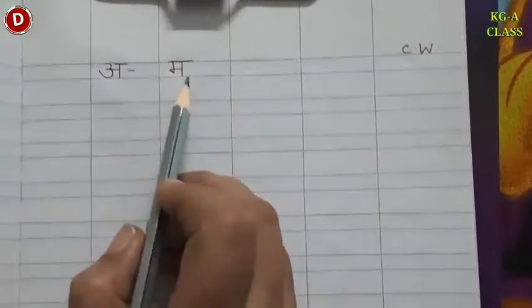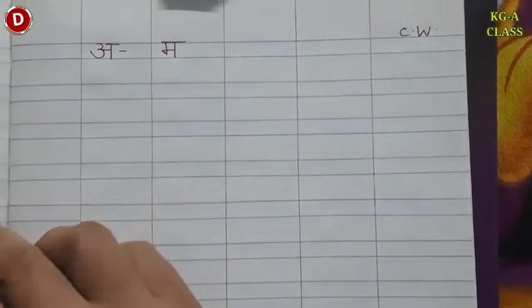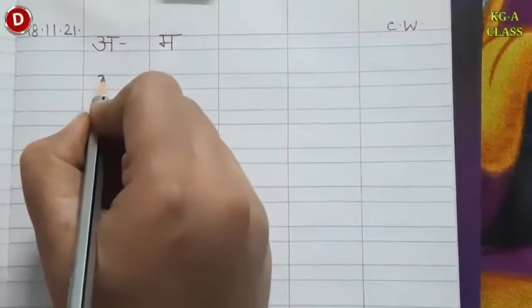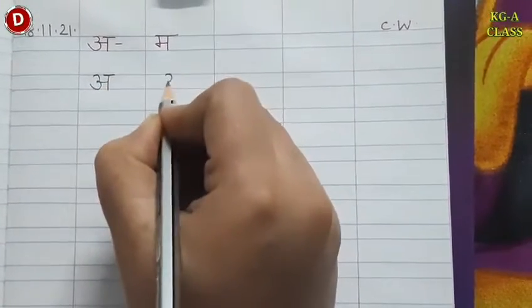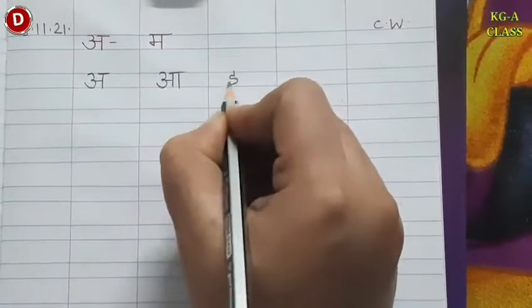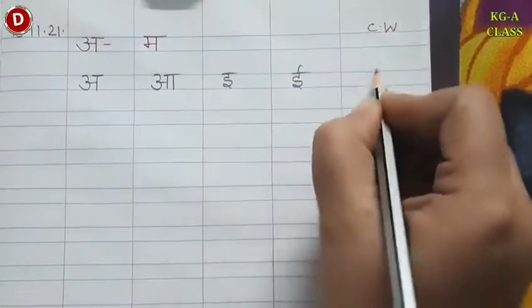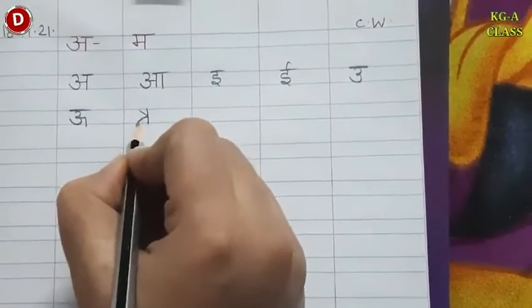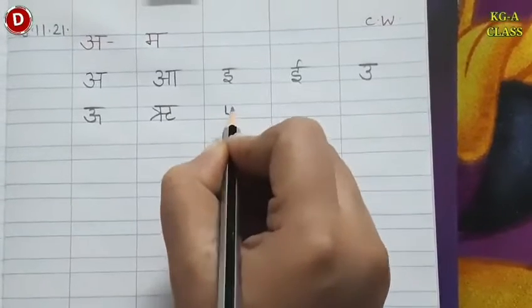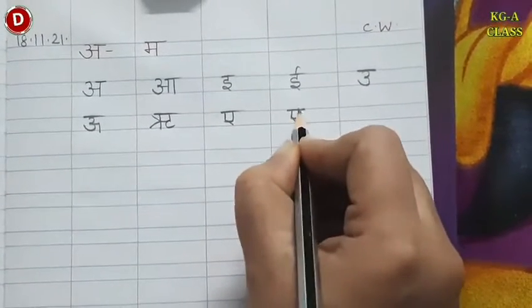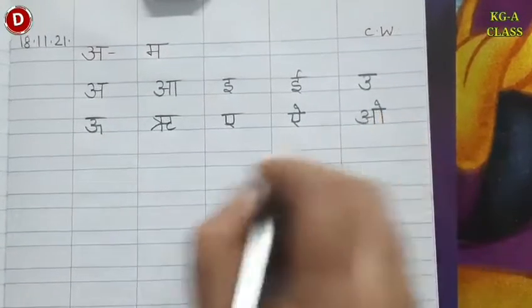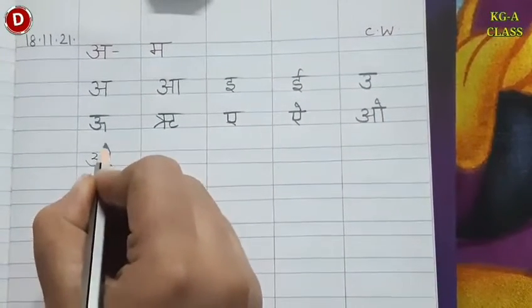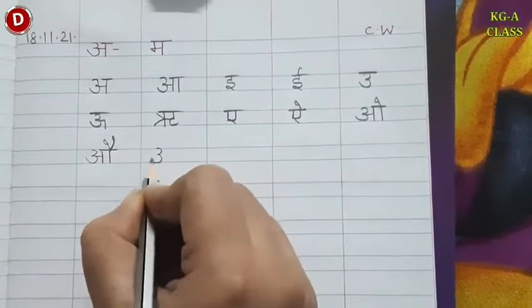Now it's time to do practice work. In practice work you will write A se leke maata ki series in your Hindi notebook. First write today's date — today is 18th November 2021. We will write the swar. The first swar is A, A, choti E, badi E, chota U, bada U, ri, A, I, O, au, ang.